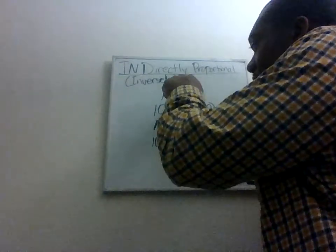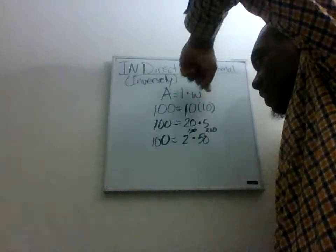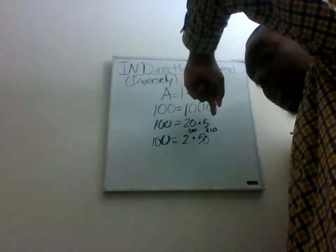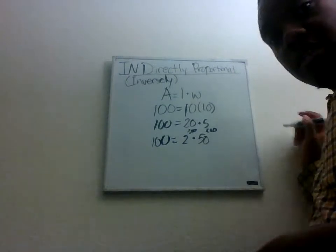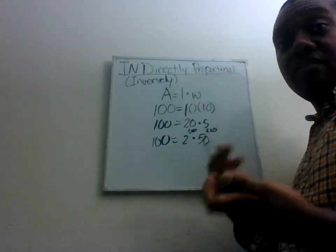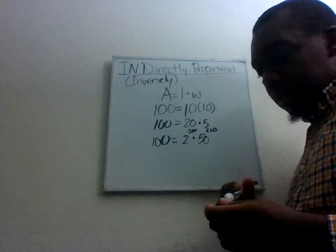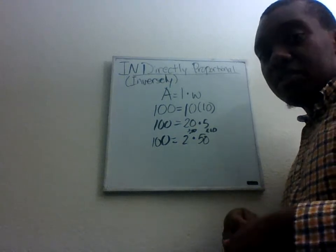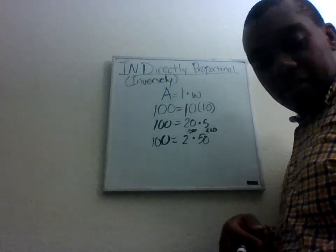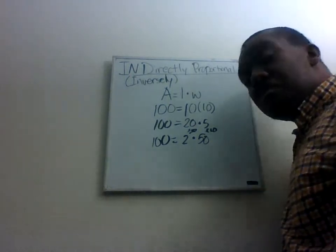So as this one increased, the other one decreased. And as the first one decreased, the other one increased. These are indirectly proportional or inversely proportional for one another. So length is inversely proportional to length. That's a cool concept.